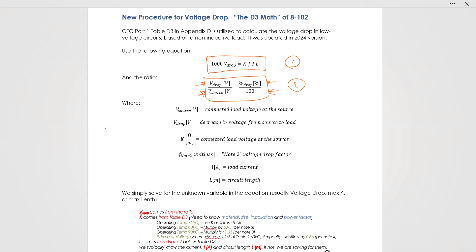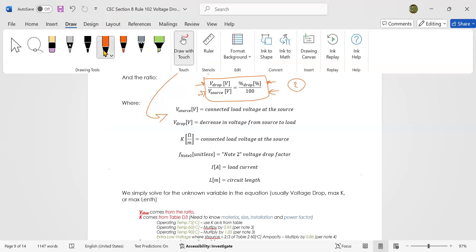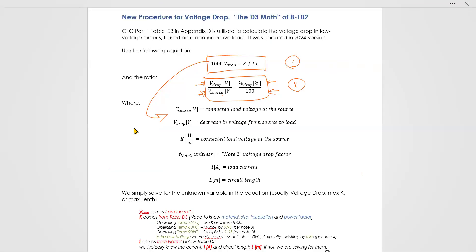Equation one has these variables. The source voltage is the connected load voltage at the source - that's what is given. If there is zero voltage drop, then 100% of the source voltage will go to the lights in the distance.